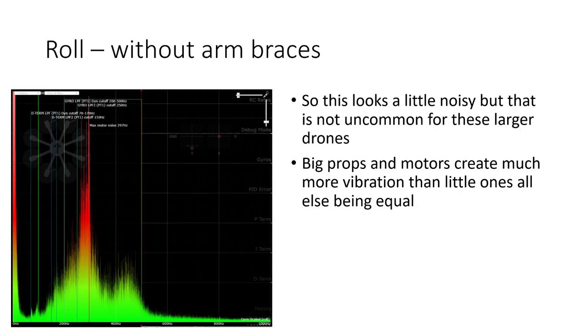So this is the gyro scaled black box log for the roll axis of Alex's Shen drone Sicario. And we can see that it looks a little noisy compared to what we might expect for something like a five inch freestyle drone. And that is not uncommon at all. As you get to larger props, seven, eight, even 10 inch diameter props, the balance of the prop is never quite as good. It's impossible to get a seven inch prop as well balanced as a five inch prop. And so they do generate more vibration. And we can see that here in this large peak of motor noise. And this is not something that typically we need to worry about at all. This is perfectly normal for a larger drone like this. And it's not going to be causing the vibration issues that Alex has identified.